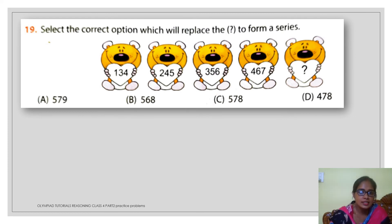Here you have a number series. Select the correct option which will replace the question mark or you can say the missing number to form the complete series. Here if you see the first two numbers 134 and 245. Just we go on subtracting the bigger number 245 and just you subtract 134 from this. You will get 1, 1 and 1. So the difference here is 111.